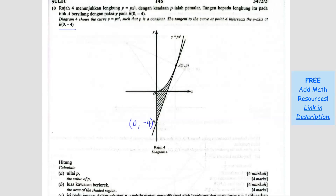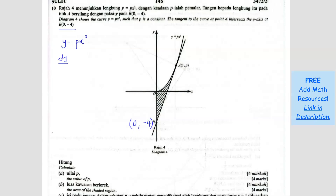To find the value of p, note that this is a tangent at point A on the curve. We can use dy/dx — the gradient of the curve at this point should be the same as the gradient of the tangent. So dy/dx equals 3px squared. At point A where x equals 1, the gradient is 3p times 1 squared, which is 3p.